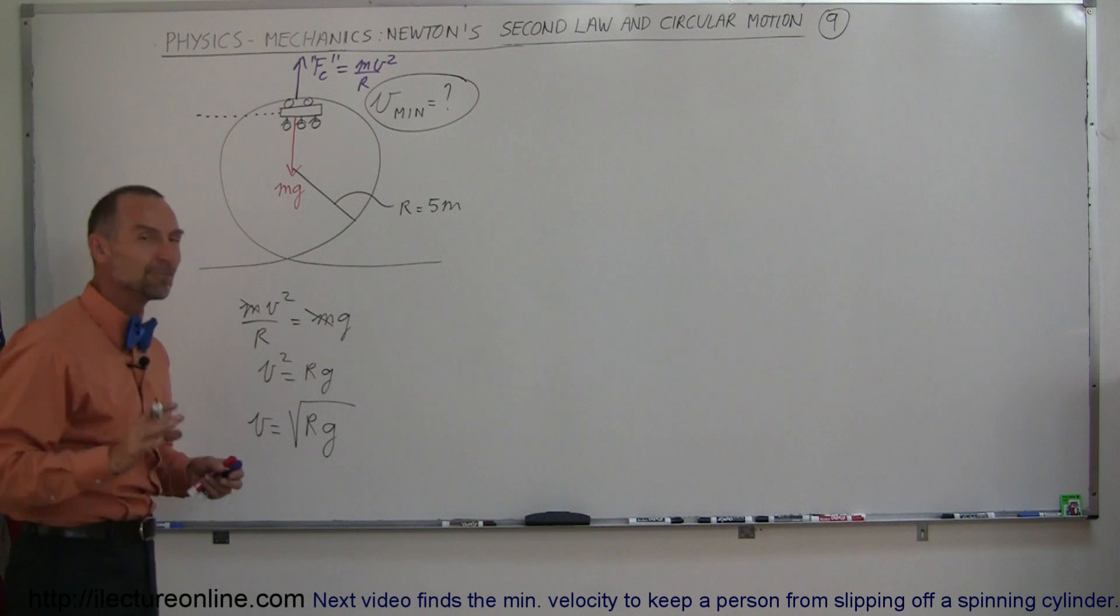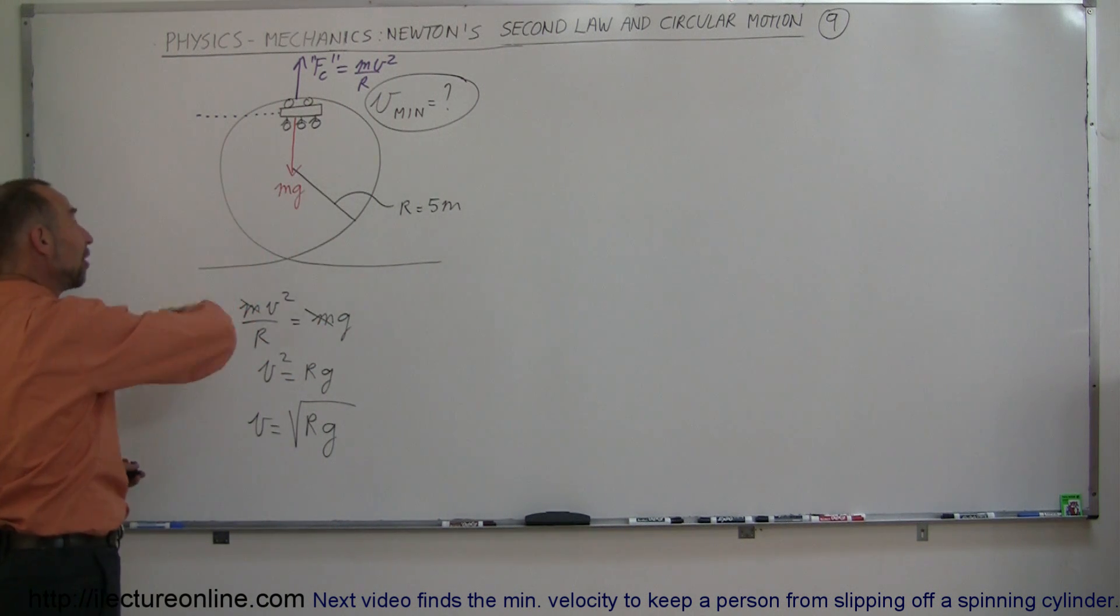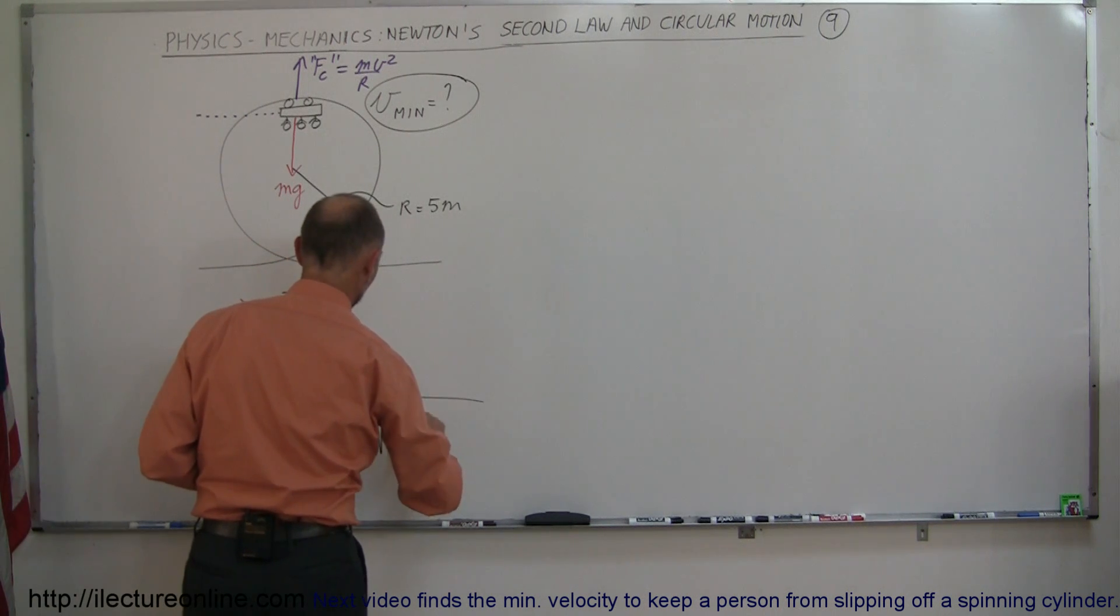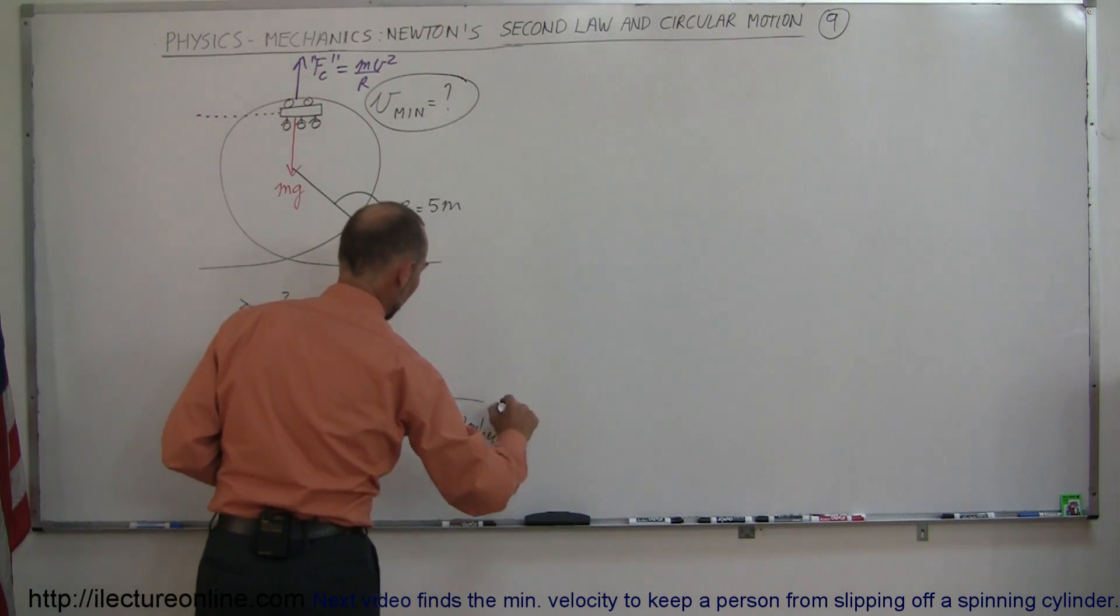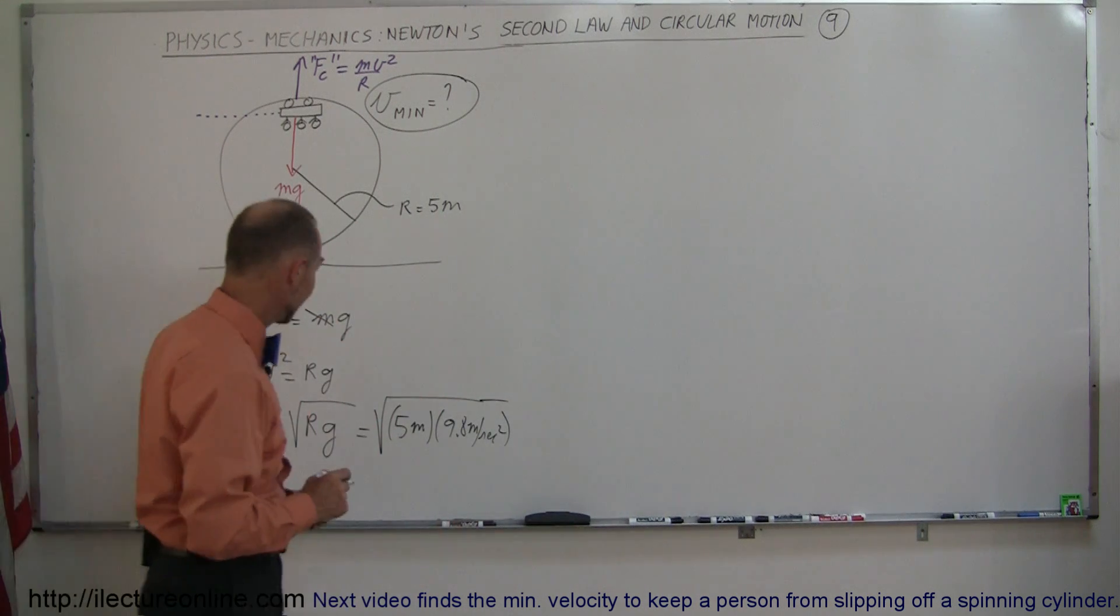In this case, we're looking for the minimum velocity because any slower than that, the car will actually fall off the tracks, and that's not a good thing. So this equals the square root of the radius, 5 meters, times g, 9.8 meters per second squared, which equals the square root of 49.